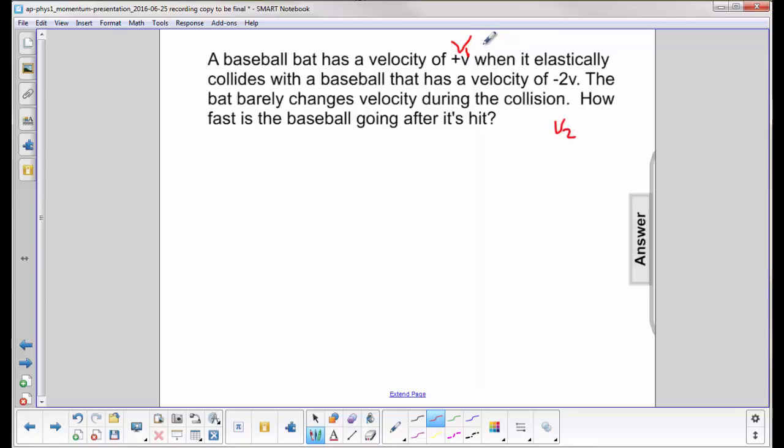The bat barely changes velocity, so what we have here is v1 will equal v prime, and we want to find the velocity of the baseball after it's hit. That's what we want to find.